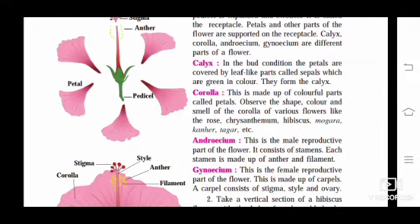Calyx: In the bud condition, the petals are covered by leaf-like parts called sepals. They are called the calyx. In this figure, you can see the green color, small leaf-like structure above the pedicel called the calyx.